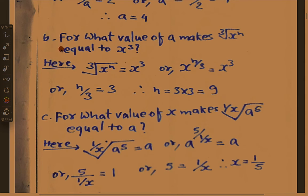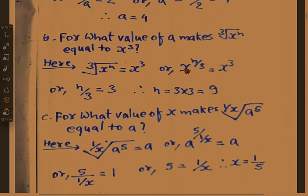B number: for what value of n does the 3rd root of x power n equal x cubed? Here the 3rd root of x power n equals x power n upon 3. Now x power n upon 3 equals x cubed. Since base x is common, powers shall be equal, so n upon 3 equals 3.